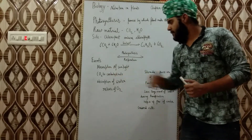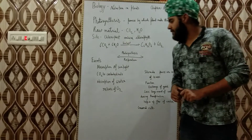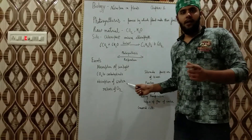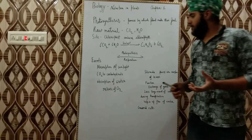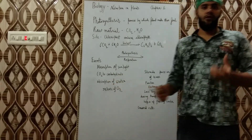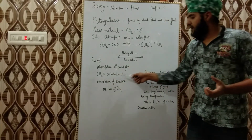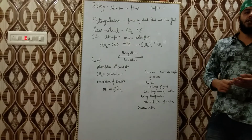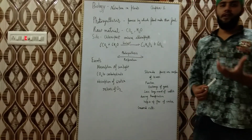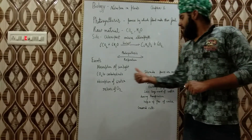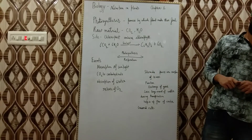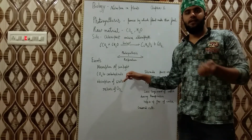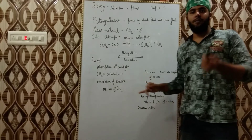First is the absorption of sunlight. Second, it is used to make carbohydrates. When water is absorbed through the roots and CO2 is absorbed, it is converted into carbohydrates and oxygen is released. The product is then converted into starch and stored in the plants.